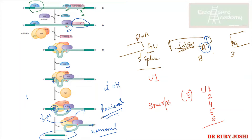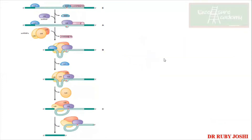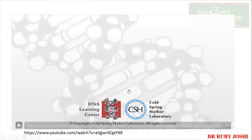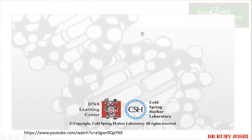The intron lariat is removed along with the spliceosome machinery, which later gets disassembled, and the introns are degraded by RNases. This is how the spliceosome machinery works — these are the steps involved in removal of the introns. There is a video I wanted to share, so we can watch it again; please watch and let me know if you have doubts.